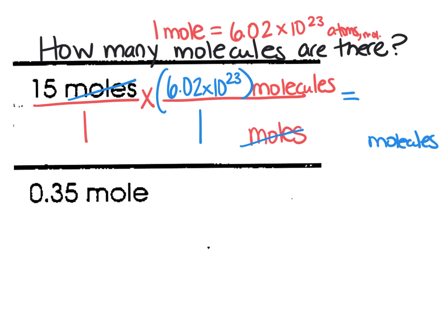So what we have is 15 times 6.02 times 10 to the 23rd over 1. Any number over 1 is just itself, so we multiply this to find out how many molecules we have. When you put that in your calculator, you should get 9.03 times 10 to the 24th molecules.